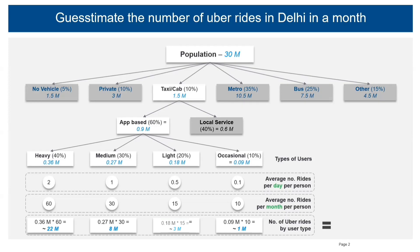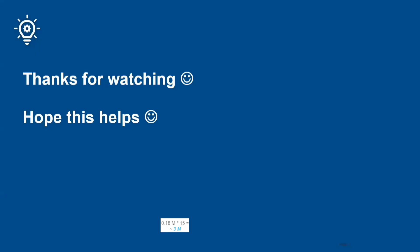Adding these up, the final number of Uber rides in Delhi in a month comes to 34 million rides. I hope this helps — thanks for watching!